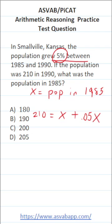Now, in case it's not obvious, I want to put a 1 in front of this X, and this becomes 210 equals, what is 1 plus 0.05? 1 plus 0.05 is 1.05X.